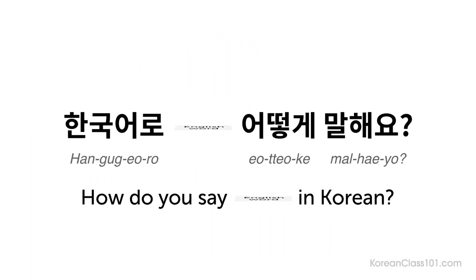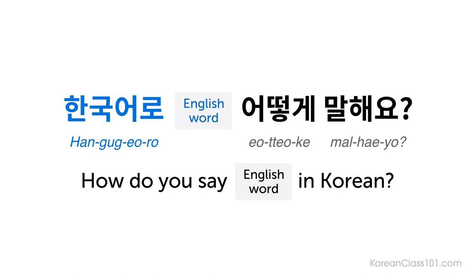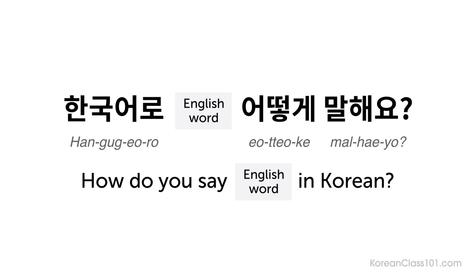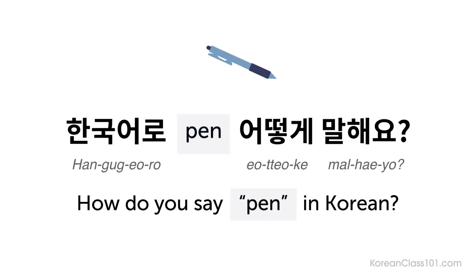The pattern is: 한국어로 [English word] 어떻게 말해요? — 'How do you say [English word] in Korean?' To use this pattern, simply replace the English word placeholder with the word you want to know. For example, to ask about 'pen': 한국어로 pen 어떻게 말해요? — How do you say pen in Korean?